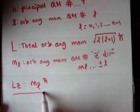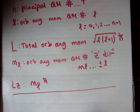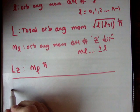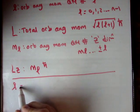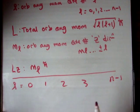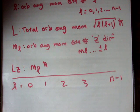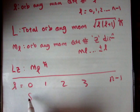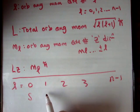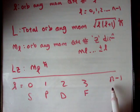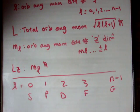Now we need to discuss spectroscopic notation — I think it was chemists that came up with this. L goes from 0, 1, 2, 3, up to N minus 1. An orbital angular momentum quantum number L of 0 is called an S shell; L of 1 is a P shell; 2 is a D shell; 3 is an F shell, and then it continues G, H, I, J, K, and so on.